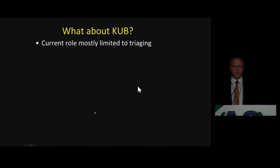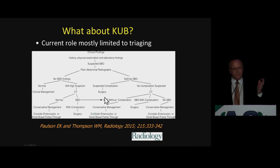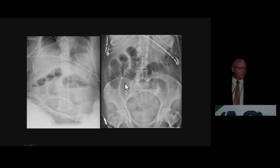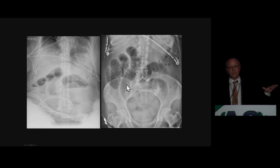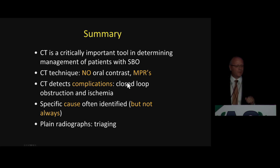One word on the role of KUB. It still has its use mostly for triaging patients and deciding what to do next. As shown in this relatively recent paper by Eric Paulson and Bill Thompson — experts in the field of bowel obstruction — it does well in determining when to use CT versus KUB. They start with a KUB: if negative and there's low clinical suspicion, nothing else to be done. Every other patient essentially goes to CT. On an abnormal KUB we see signs of obstruction and need to look for complications, potential cause, and closed loop — the patient should go to CT unless there's a clinical reason to take him or her directly to the operating room.